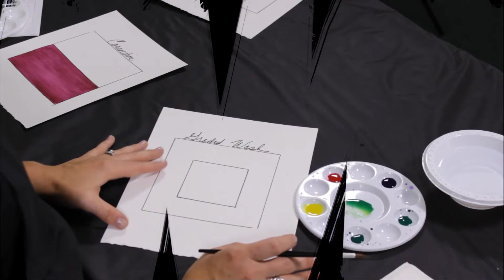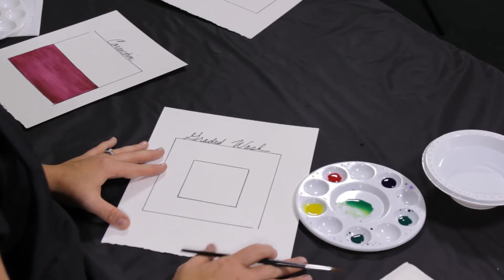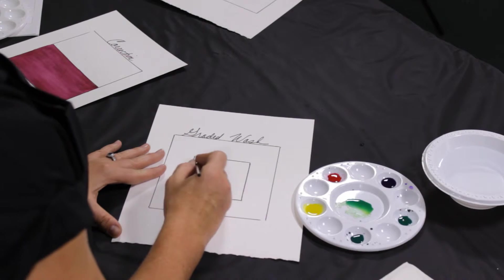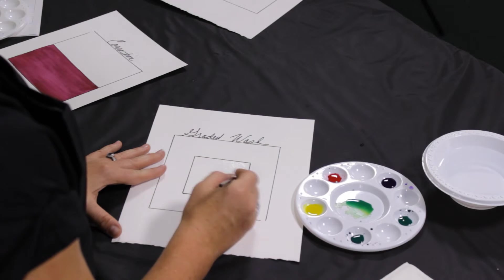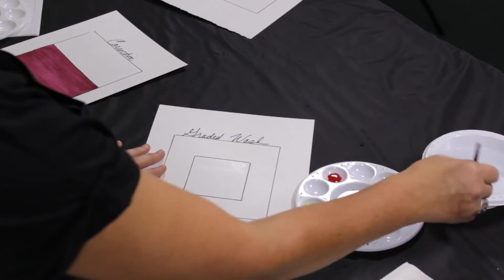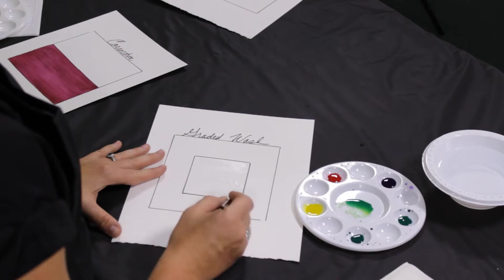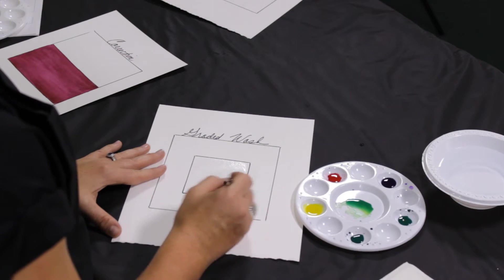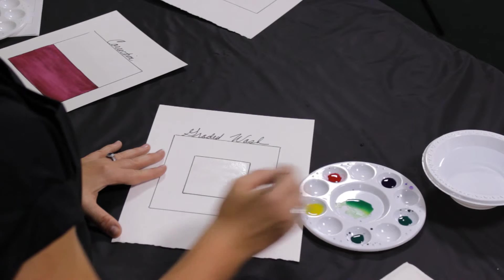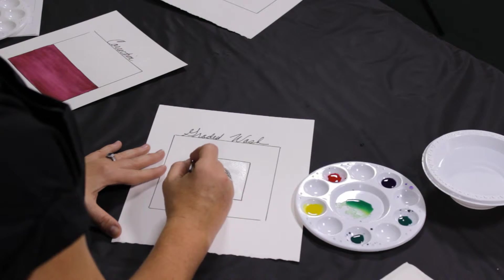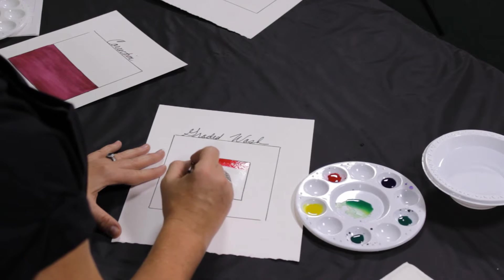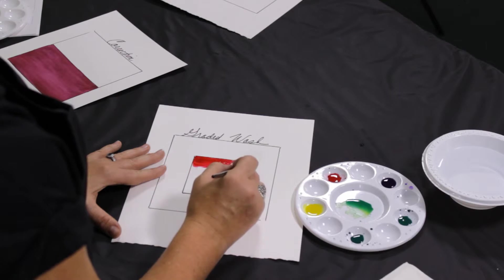Okay, the next technique is a graded wash. You'll use this a lot if you're doing landscapes or portraits. You're going to start the same way you did the wash. You're going to wet the area. You don't need a lot of water when you're doing this. You just want to get the area slightly shiny. Okay, I'm going to start at the top. The only difference between a wash and a graded wash is that I'm going to try to get this to become lighter as it goes down.